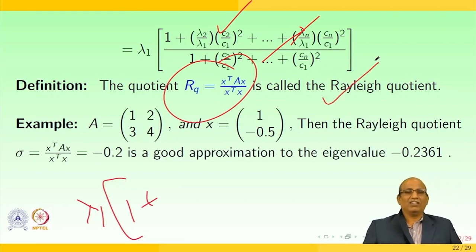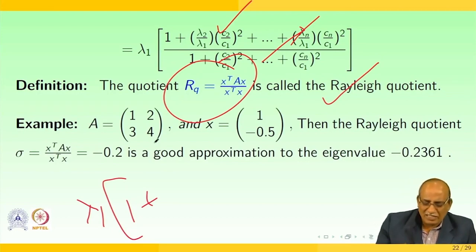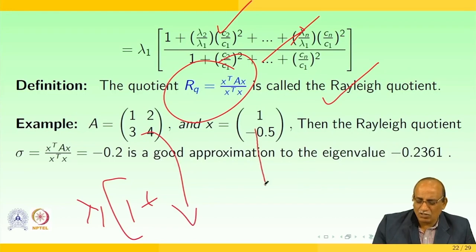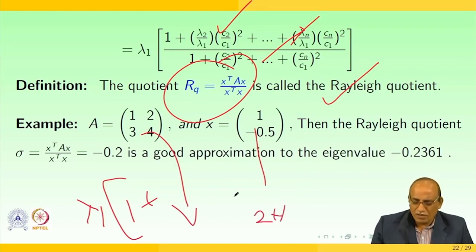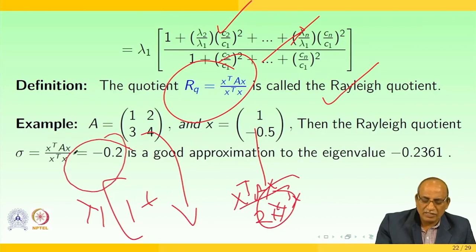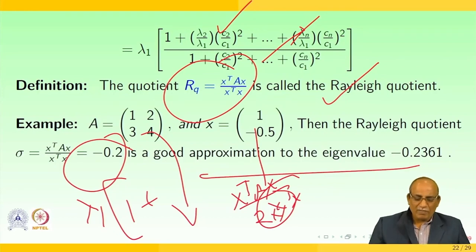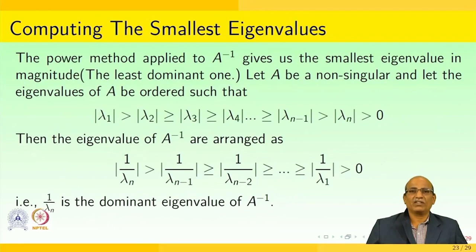The Rayleigh coefficient helps find stable approximations to eigenvalues. For example, with a given 2×2 matrix A and a 2×1 vector x, computing x^T·A·x and x^T·x gives the Rayleigh quotient, which approximates the eigenvalue at approximately -3 with a best approximation of 0.2361.